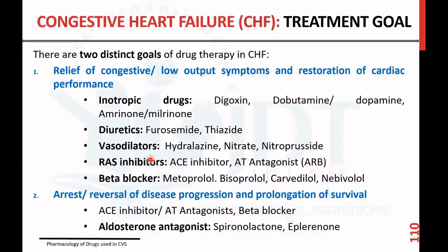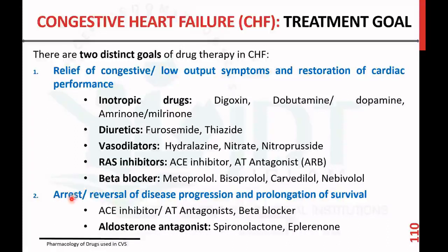There are two treatment goals for congestive heart failure. The first is relief of congestive or low output symptoms and restoration of cardiac performance — achieved using acute inotropic drugs, diuretics, vasodilators, renin-angiotensin system inhibitors, and beta blockers. The second goal is arrest or reversal of disease progression and prolongation of survival, achieved using ACE inhibitors and aldosterone antagonists.